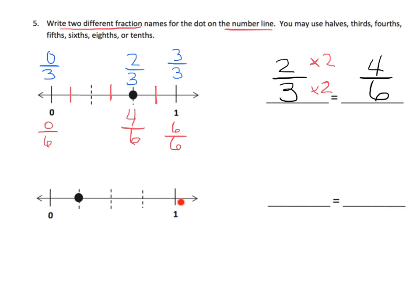So we're going to identify that there are 4 intervals from 0 to 1. So that makes this 0 fourths. That makes this 4 fourths. And that means this guy is 1 fourth. And then if I want to make a new fraction, let's cut each of those in half. So instead of having 4 intervals, we're now going to have 8 intervals. So this becomes 0 eighths. This becomes 8 eighths. And that means our dot here is 2 eighths.